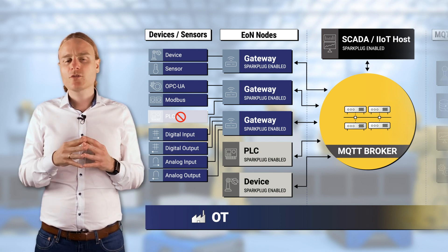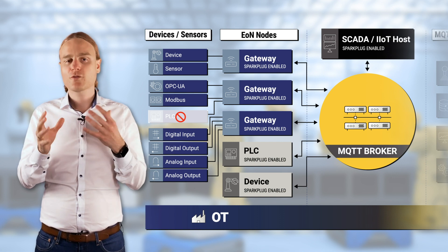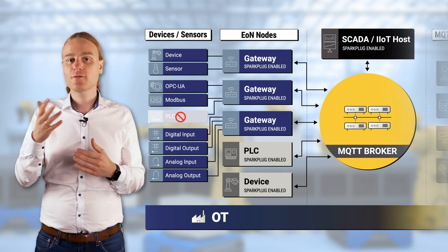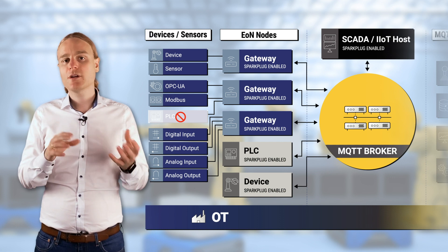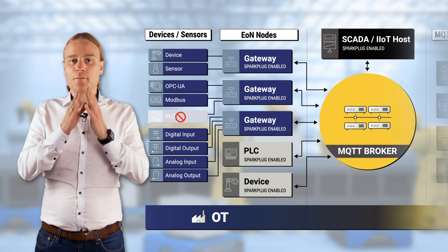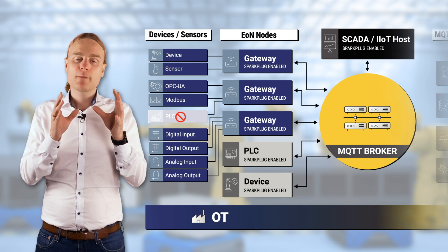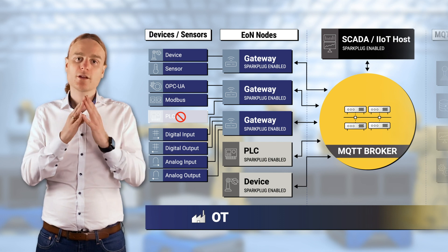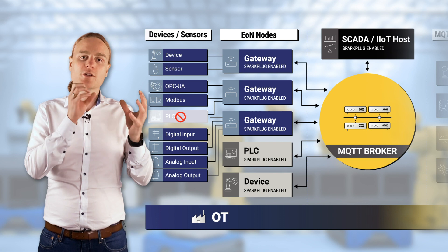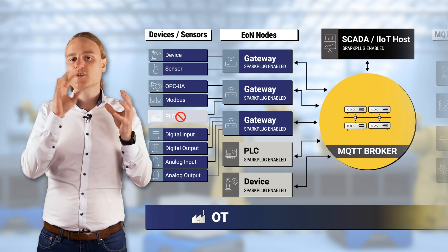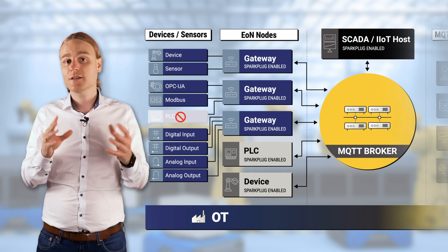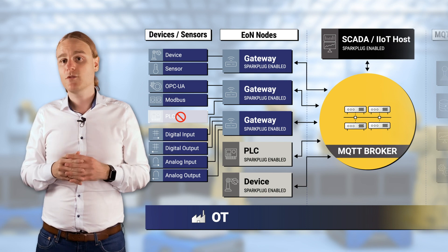Edge of network nodes come in many different shapes and forms — there are different vendors who sell them and you can also build your own with open source components. In general, it is one of the critical pieces you have for bridging OT technology to Sparkplug, especially for devices that cannot speak MQTT themselves.